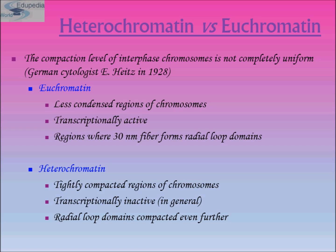The compaction level of the interphase chromosome is not completely uniform. Euchromatin consists of less condensed regions of the chromosome; they are transcriptionally active, where the 30 nanometer fiber forms a radial loop domain. Heterochromatin, on the contrary, consists of tightly compacted regions of the chromosome; they are transcriptionally inactive, with radial loop domains compacted even further.